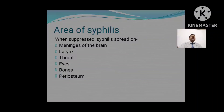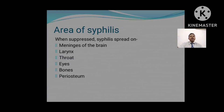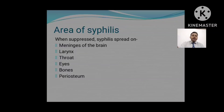When Syphilis is suppressed, it spreads on the meninges of the brain; the larynx is disturbed and painful; we get sore throat or painful throat. Syphilis also affects the eyes, the bones, and the periosteum. So these are the areas where Syphilis can attack.